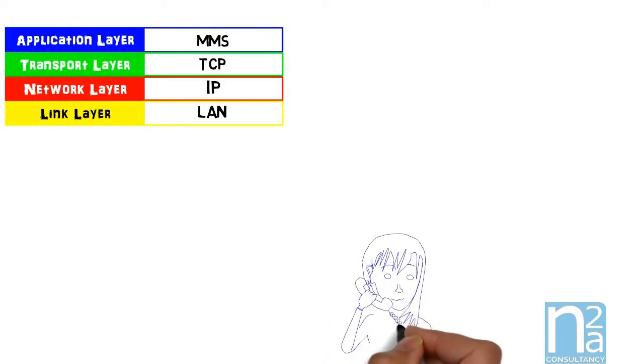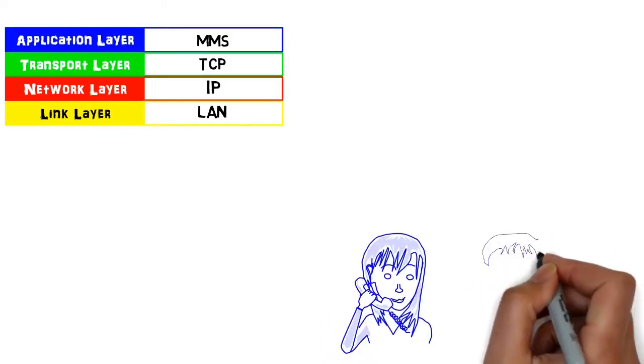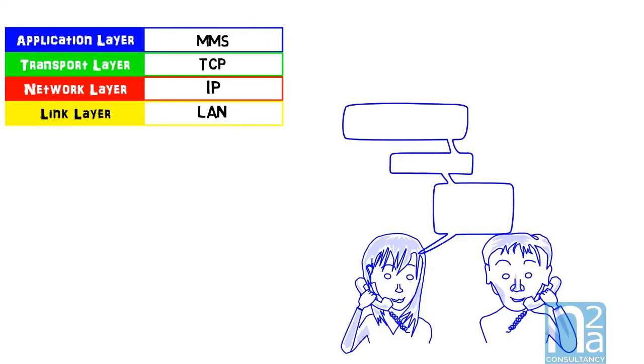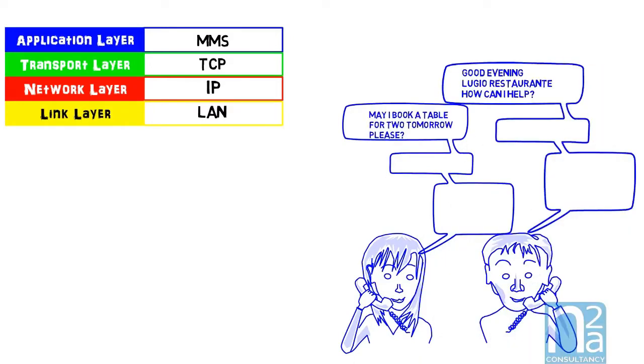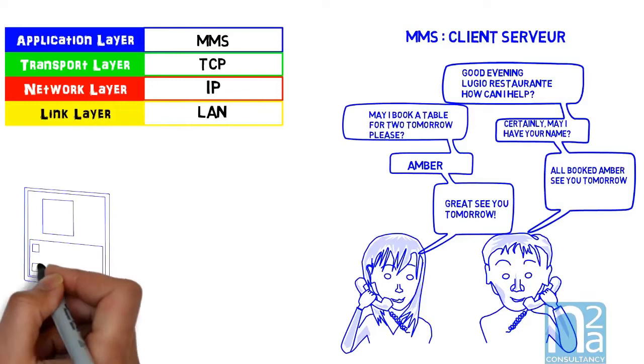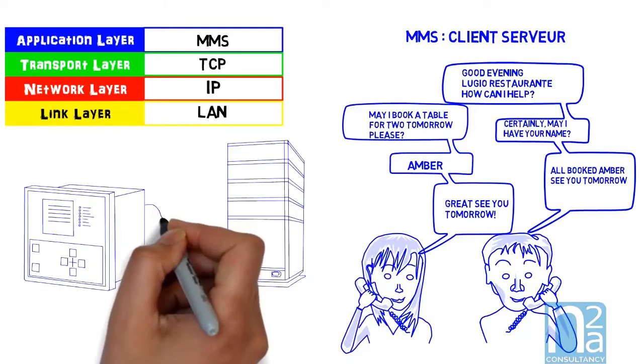First one, and the most used is MMS which stands for Manufacturing Message Specification. It is a standard internet application defined by ISO 9506. It is a client-server communication protocol, a private and secure conversation. The client sends a request to a server and the server sends back an answer. It is used for communication between the IEDs and the SCADA system to give status, make reporting or send control instructions.